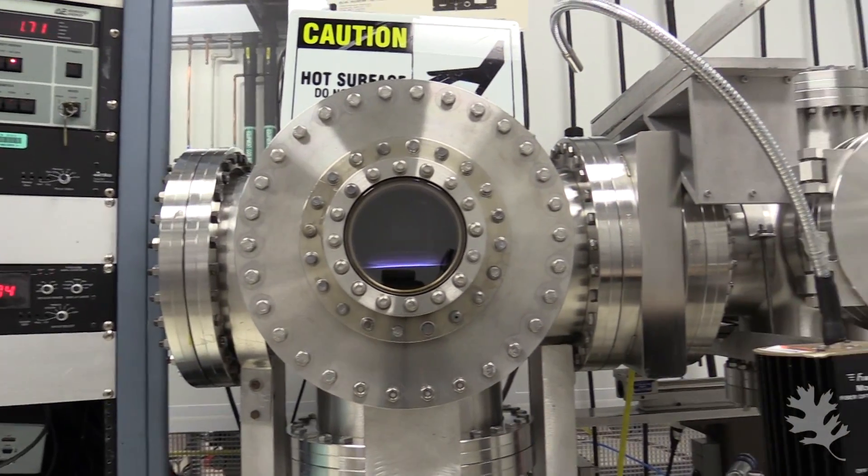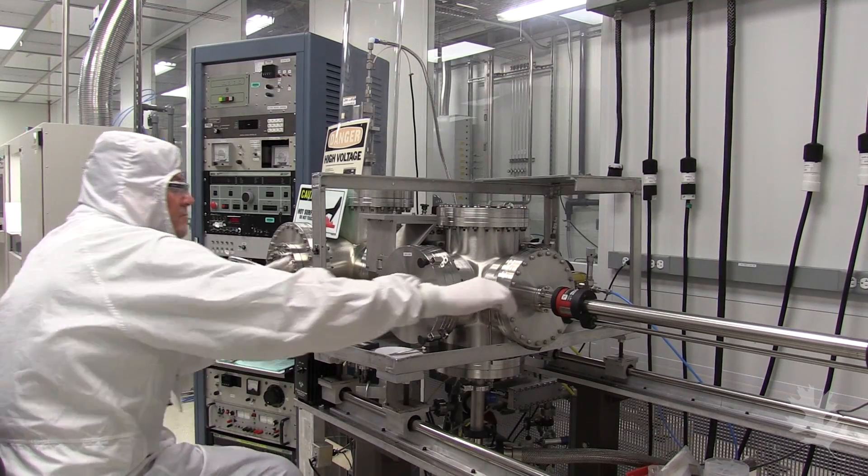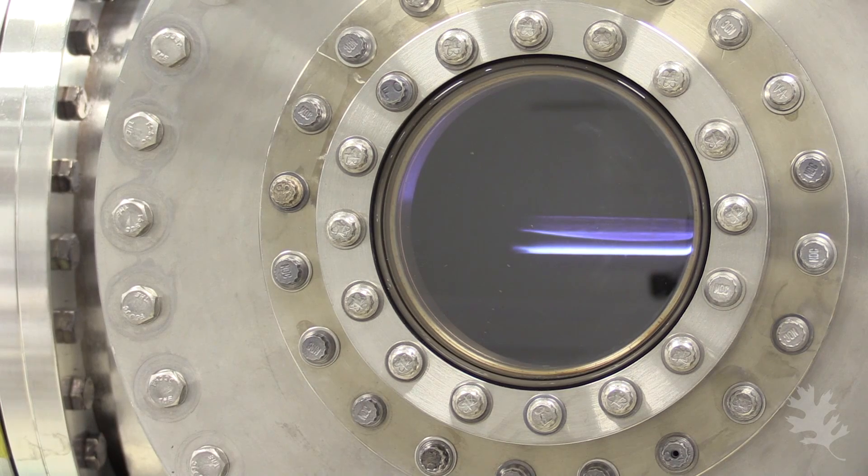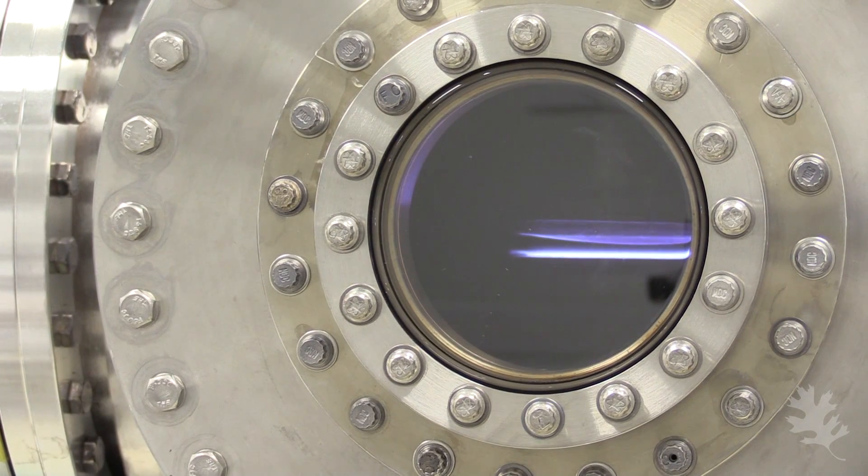We originally started trying to grow a type of catalyst based on a material called graphene, and as it turned out with the equipment we have, we couldn't make graphene, but we could make these little tiny spikes.